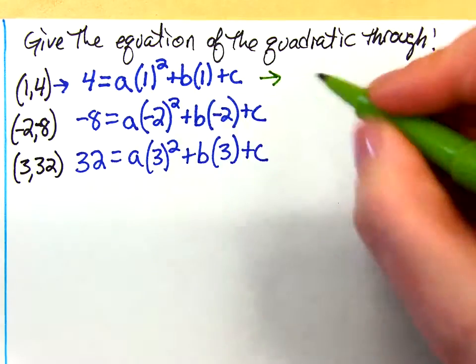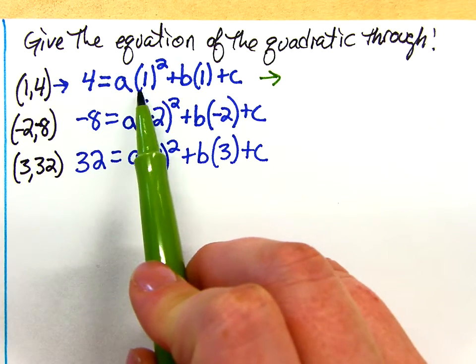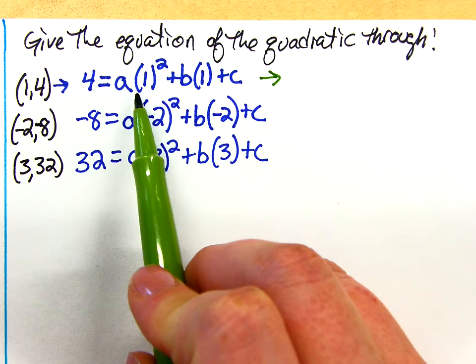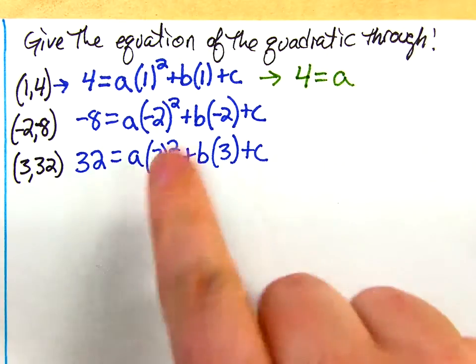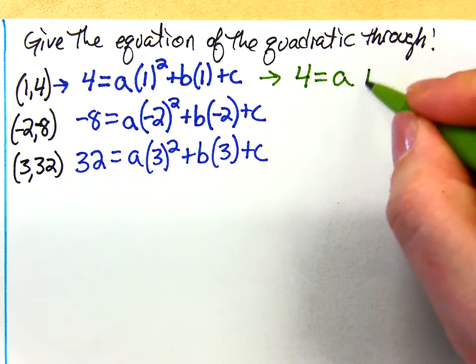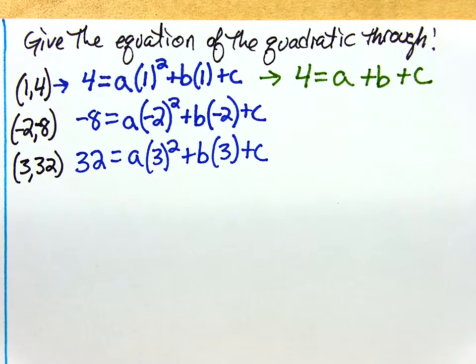Let's look over here. I'm still going to have 4 equals, but now I have a times 1 squared. Well, what's 1 squared? Just 1. So this is now just 4 equals a. b times 1 is just b plus c. So if I just simplify what I have there, that looks like a much simpler equation that I produced. It's the same one, I just simplified the pieces.